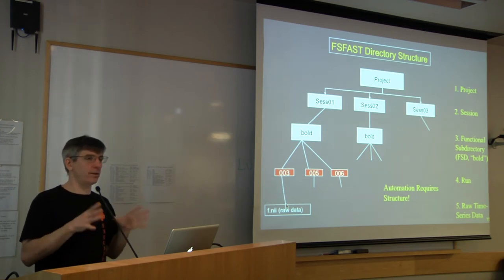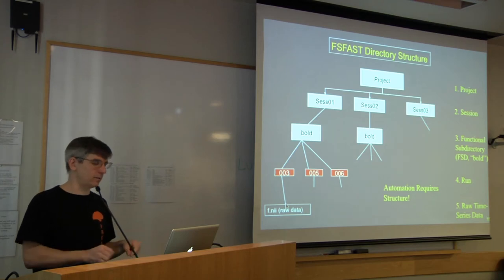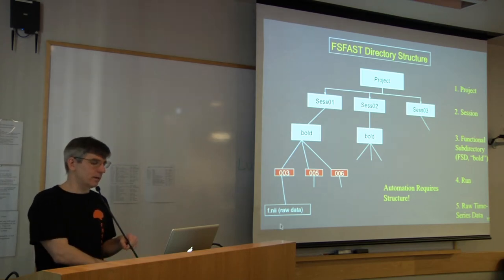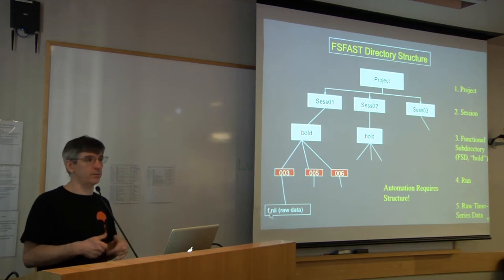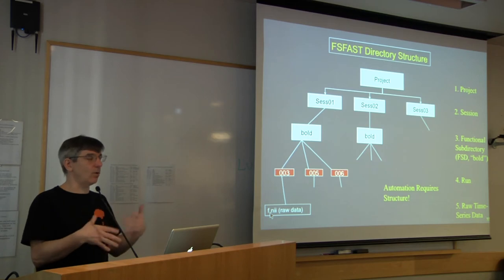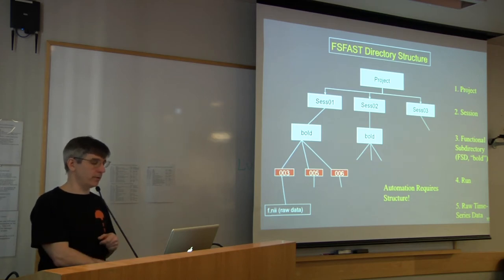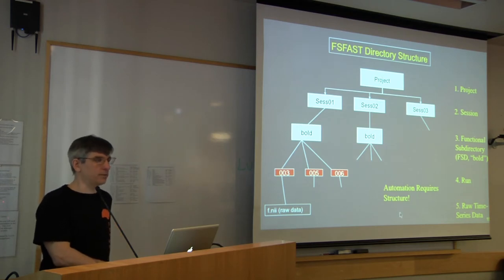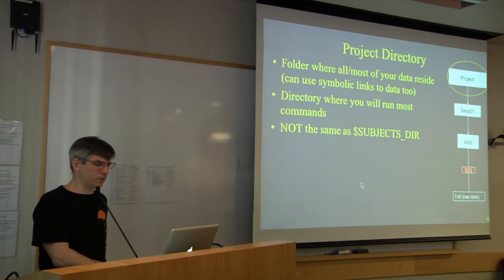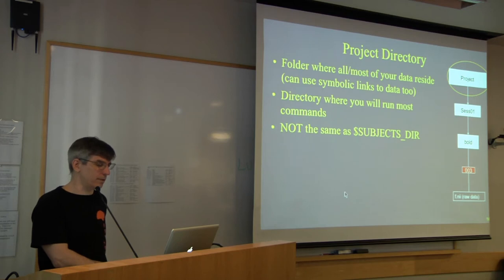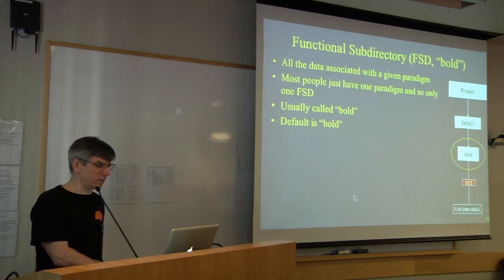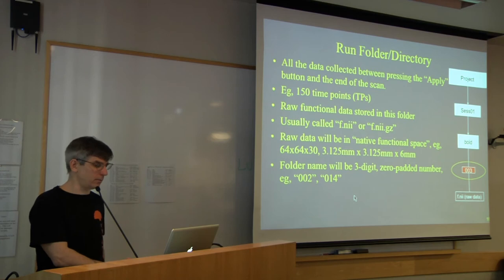Under the functional subdirectory you have a folder for each run. For example, runs 3, 5, and 6 might be task runs, and run 4 a rest run. Underneath each run folder is the raw data — the 4D time series data. As FSFAST runs, it populates that directory with many more files.